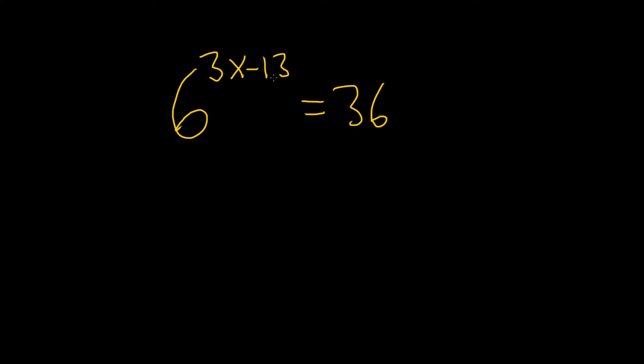Because if we could do that, we can drop the 6s. So if you ever have b to the x equals b to the y, when the bases are the same, you can just drop the bs and you get x equals y. Really powerful technique.